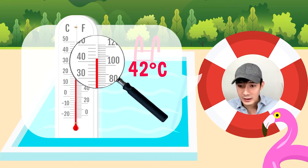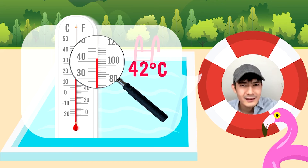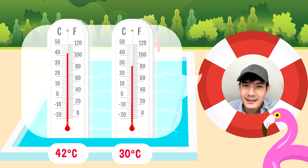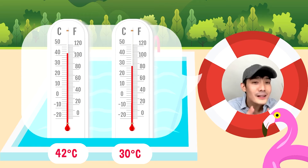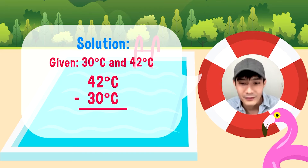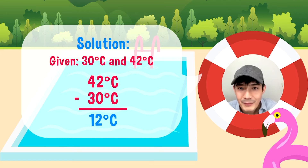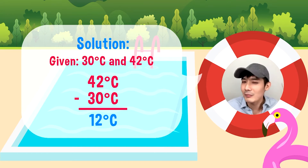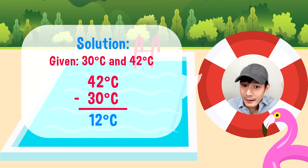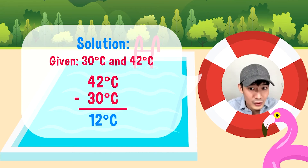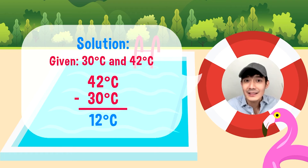Alam na natin kung paano magbasa ng temperature gamit ang thermometer. Ngayon, going back dun sa previous pool natin, ano yung difference? Natatandaan nyo ba yung difference? Kanina yung 30. So, ang mangyayari, we will be subtracting again: 42 degrees Celsius minus 30 degrees Celsius will give us 12 degrees Celsius. At laging tandaan when reading temperature, especially using the glass thermometer, ay laging vertical at eye level ang thermometer kapag binabasa ito para tama yung makuha nating measurement.